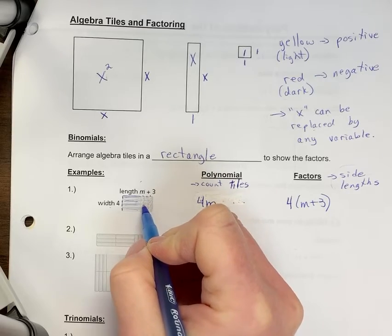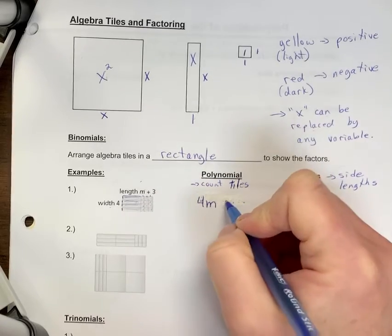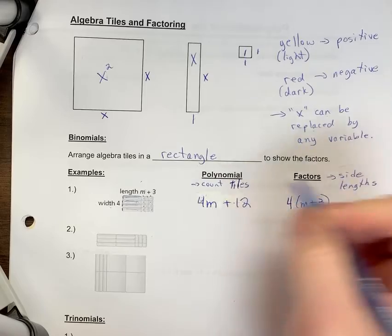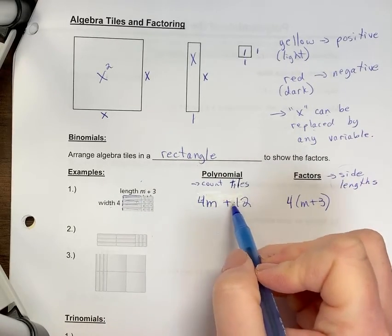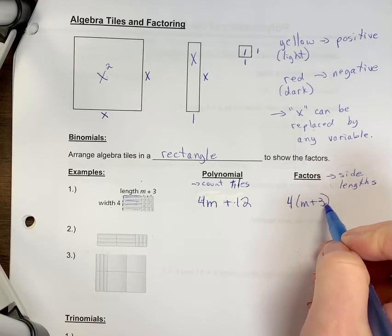So we have one, two, three, four, five, six, seven, eight, nine, ten, eleven, twelve. So you have plus twelve of them. Everything's a light color. So these are yellow. So the polynomial is called four m plus twelve. The factors are four times m plus three.